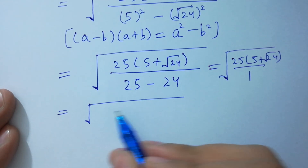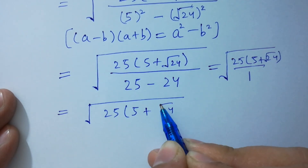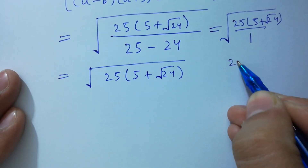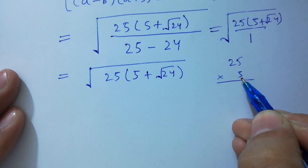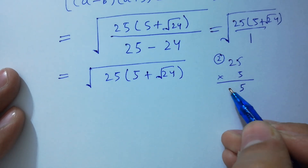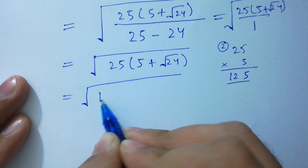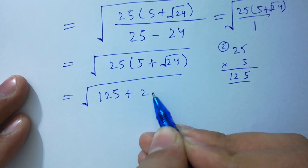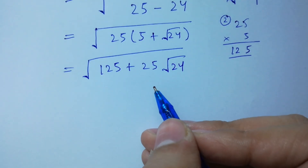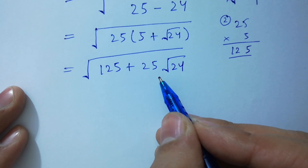Square root of 25 is 5, so we have 5 times (5 plus square root of 24), which gives us 25 times 5 equals 125, plus 25 times square root of 24. So the numerator is 125 plus 25 square root of 24.